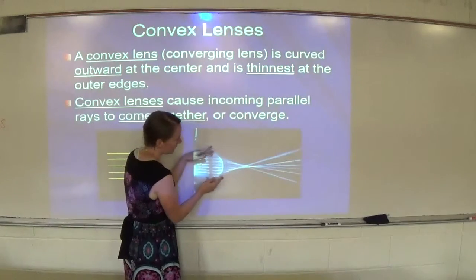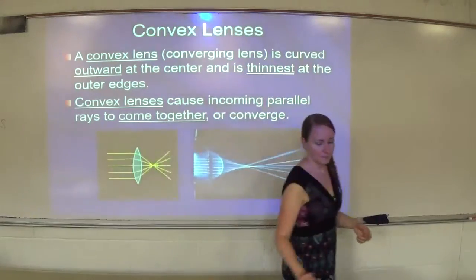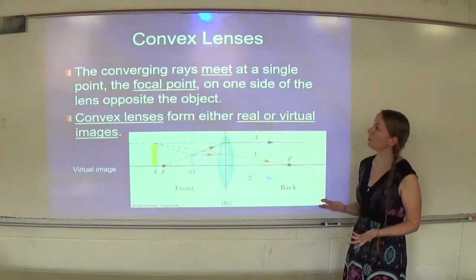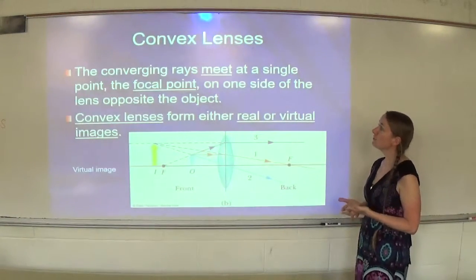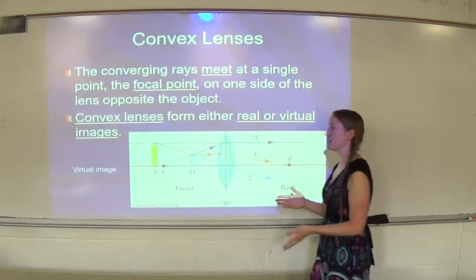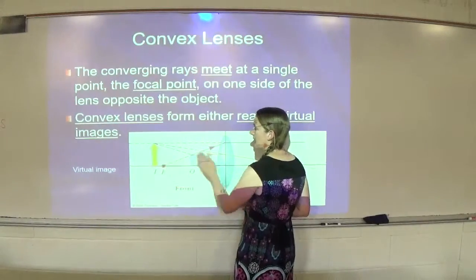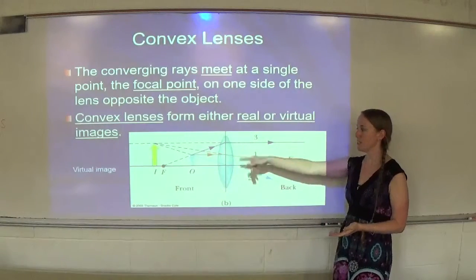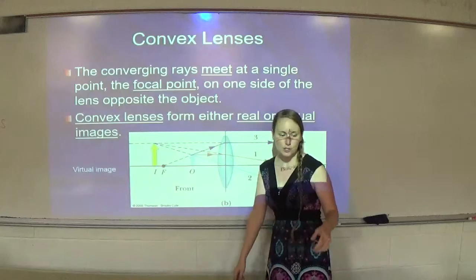Here you can see the light rays coming together right at the focal point. The converging rays meet at a single point called the focal point on one side of the lens opposite the object. Convex lenses can form either real or virtual images. In this example, the object is between the focal point and the lens, so it forms a virtual image that cannot be projected.